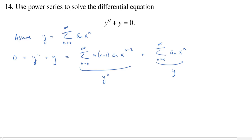To combine these into one summation I need to line up the powers of x. I have x^(n−2) versus x^n, so I need to raise that n−2 into an n. To do that I'll lower the starting index — replacing the 0 by a 2, since n=0 and n=1 give zero anyway, so dropping by 2 lands at 0, not something negative.